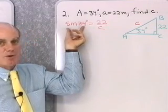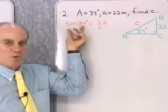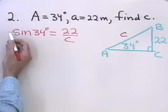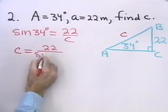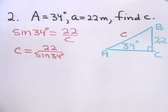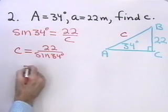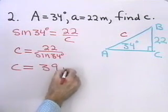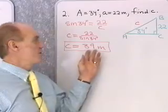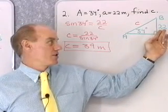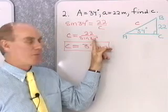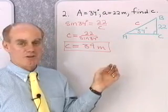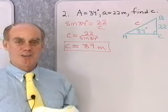Whatever this number comes out to be, it's just a number, so I treat it the same way I would any number when solving an algebra equation. I multiply both sides by C, divide both sides by sine 34, and end up with C equals 22 divided by sine of 34 degrees. Working that on the calculator and rounding to two significant digits gives C equals 39 meters.